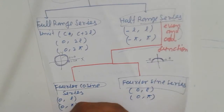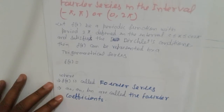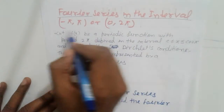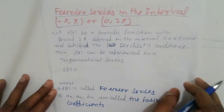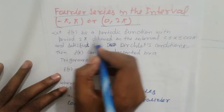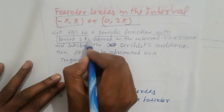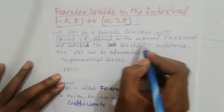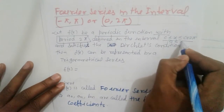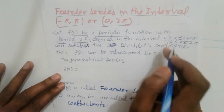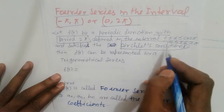Now, let's go to the definition. What is the Fourier series? The Fourier series in the interval is defined as follows. Let f(x) be a periodic function with period 2pi, defined in the interval 0 less than x less than or equal to 2pi. This must satisfy the Dirichlet conditions, which is a very important condition.